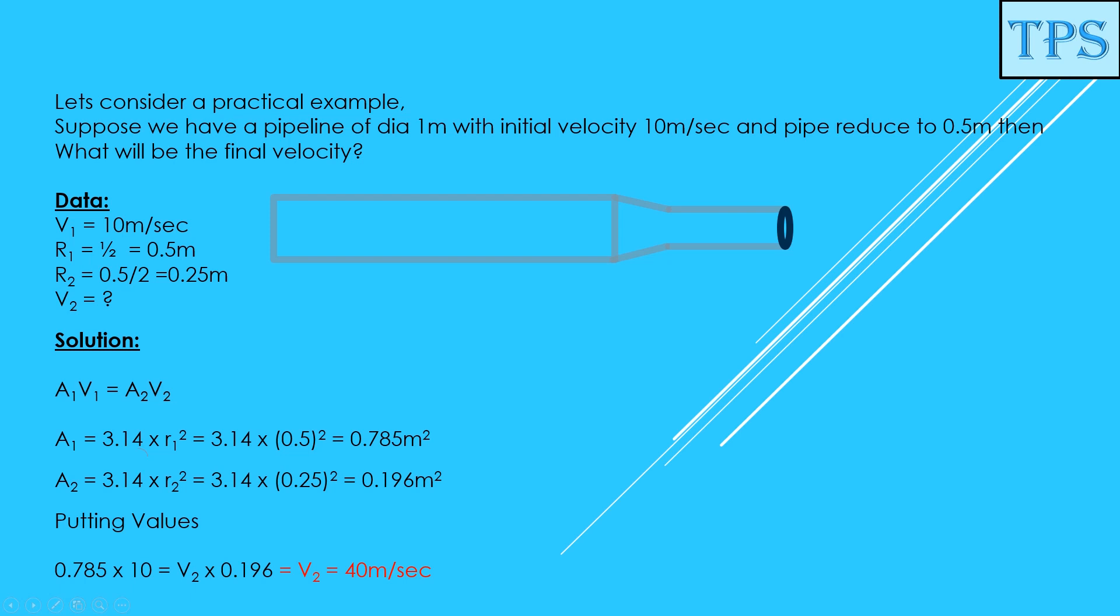What data do we have? V1, velocity in the larger pipe, is 10 meters per second. Radius of the larger pipe, half of diameter, equals 0.5 meters. Radius of the smaller pipe will be half the diameter of the smaller pipe, that is 0.25 meters. What will be the velocity in the smaller pipe?